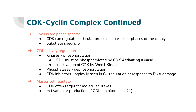Cyclins are phase specific so that CDK can regulate particular proteins in particular phases of the cell cycle. One certain type of cyclin will be transcribed during G phase, bind to CDK, and give CDK specificity for proteins that should be functioning during G1. Then those cyclins will be degraded, and S phase cyclins will be transcribed to do a similar function. Regarding CDK activity regulation: they are kinases, regulated through phosphorylation, must be phosphorylated by CDK activating kinase or CAK, and are inactivated by Wee1 kinase. CDK inhibitors are typically seen in G1 regulation or in response to DNA damage. When CDK is active and phosphorylating proteins, generally the cell cycle is moving forward.